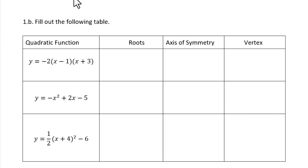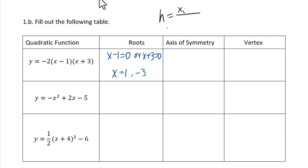Fill out the following table. Create a function: y equals negative 2 times (x minus 1)(x plus 3). For the roots, set x minus 1 equals 0 or x plus 3 equals 0, giving x equals 1 or x equals negative 3. For the axis of symmetry, h equals (x1 plus x2) over 2, so h equals (1 plus negative 3) over 2 equals negative 1.